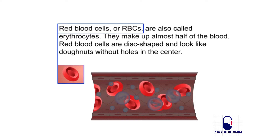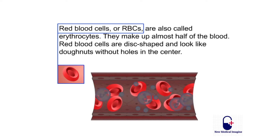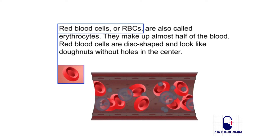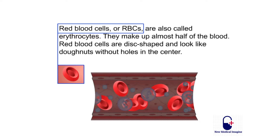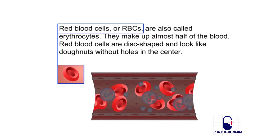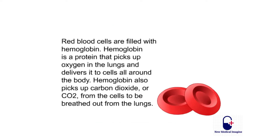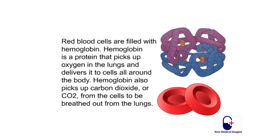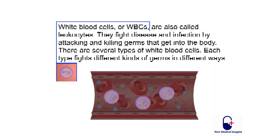Red blood cells, or RBCs, are also called erythrocytes. They make up almost half of the blood. Red blood cells are disc-shaped and look like doughnuts without holes in the center. They are filled with hemoglobin — a protein that picks up oxygen in the lungs and delivers it to cells all around the body. Hemoglobin also picks up carbon dioxide, or CO2, from the cells to be breathed out from the lungs.